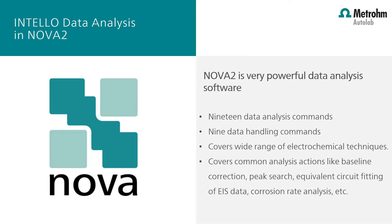Nova offers a comprehensive set of data analysis commands. In fact there are 19 analysis commands and 9 data handling commands in Nova, which can be used to analyze data from a wide range of electrochemical techniques. Nova covers common analysis actions like correcting baseline, searching for peaks, performing equivalent circuit fitting on EIS data, and determining the corrosion rate from linear sweep voltammetry.